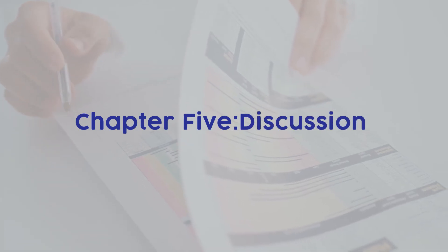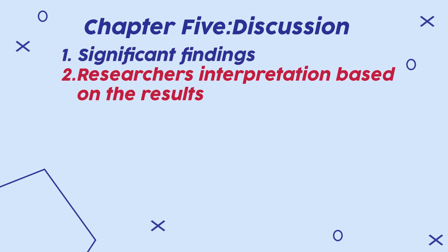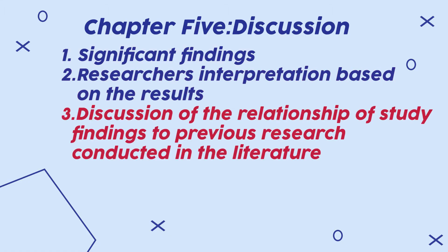This involves answering your research questions without making any conclusions. The fifth and final chapter is the discussion chapter, where you discuss the results from Chapter 4 and conclude your study. The main objective is to discuss findings in relation to the statement of the problem and research questions identified in Chapter 1. The discussion chapter includes: 1. significant findings; 2. the researcher's interpretation based on the results, normally referred to as interpretation of findings; 3. discussion of the relationship of study findings to previous research in the literature; and 4. study limitations.